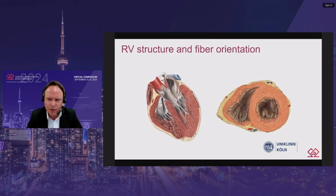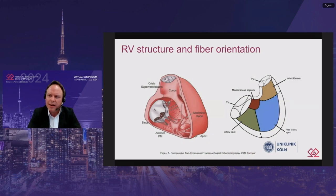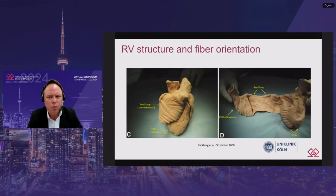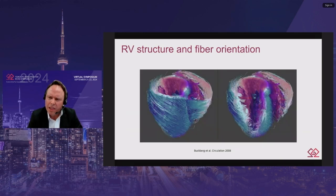The right ventricle has a complex form. It seems triangular from the lateral view and crescent-shaped in the cross-sectional view. Appearing smaller than the left ventricle, the right ventricle indeed has a larger volume. It can be subdivided into three parts: the inflow tract, the trabeculated apical portion, and the outflow tract. The right ventricular free wall is connected to the interventricular septum via the basal loop, which passes into the thin circumferential outer fiber layer of the right ventricular free wall.